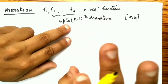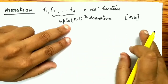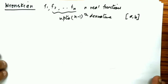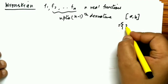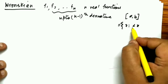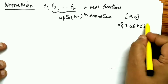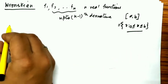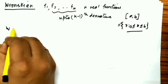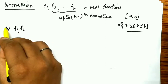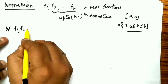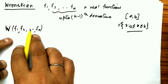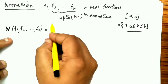We will look at the Wronskian of n real functions which have up to the (n−1)th derivative on a real closed interval [a, b]. A closed interval [a, b] is the collection of x such that x lies between a and b, with a and b included. I will denote the Wronskian by capital W of F1, F2, and so on up to Fn.